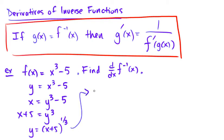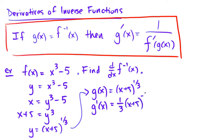So that gives us our g of x, and then we take the derivative of that, and we can do it a couple different ways. We can use the power rule, 1 third x plus 5 to the negative 2 thirds.